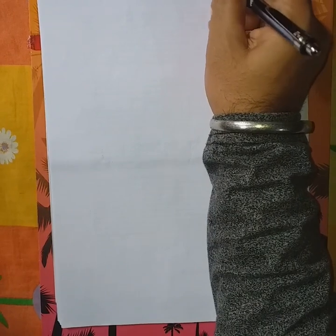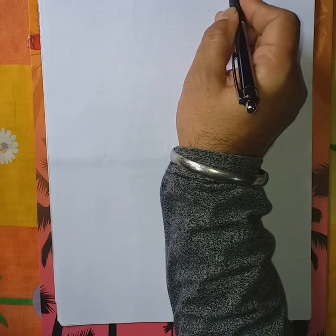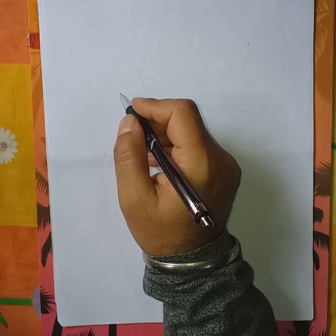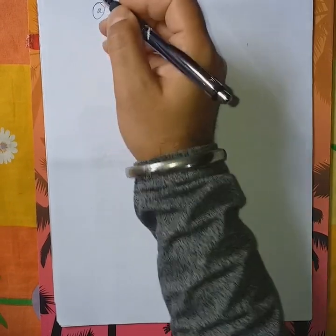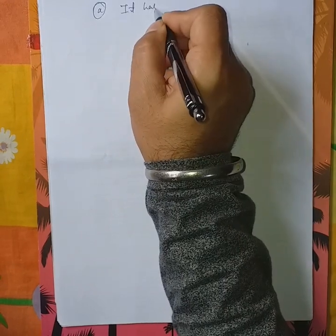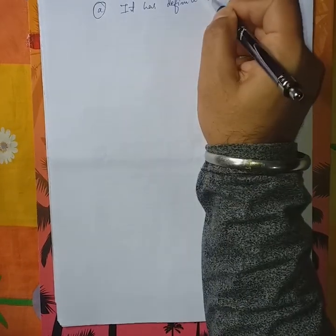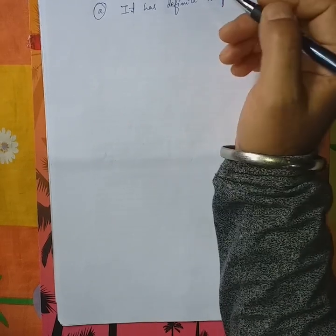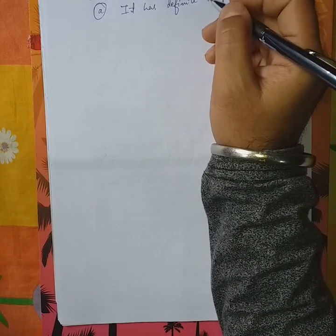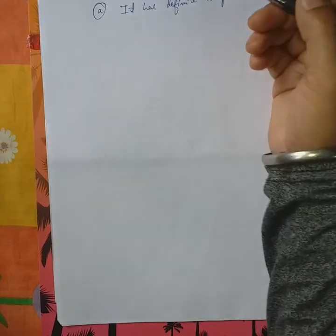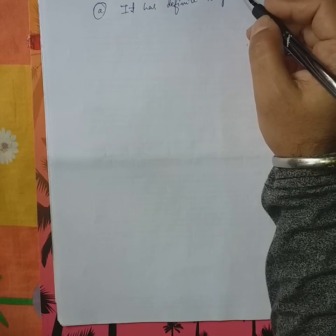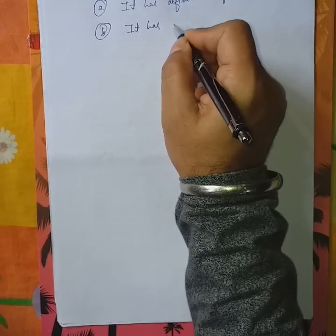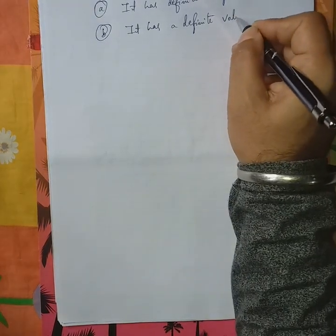So, my dear students, you have seen so many solid objects around you. So, we can note few things about this by viewing those things. Like first thing is, number A is, it has definite shape. Example, you can see nearby things like chair, table, television, utensils, etc. So, therefore, we can say that solids have definite shape.